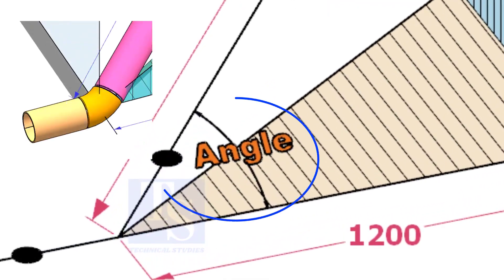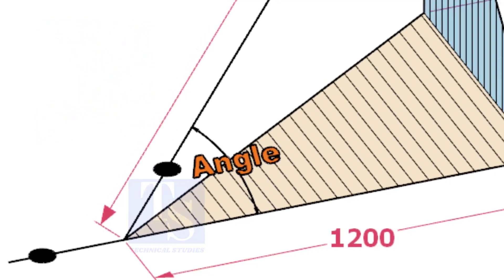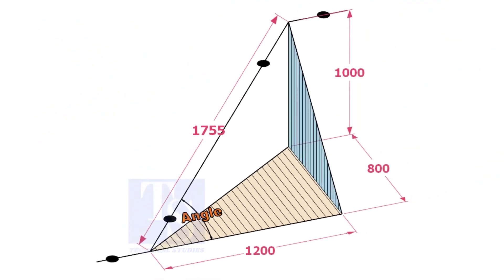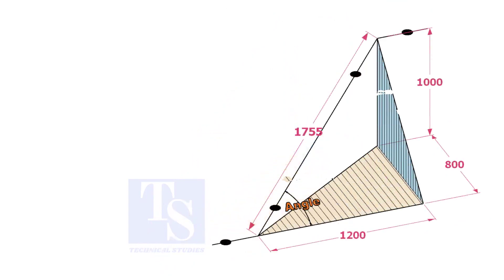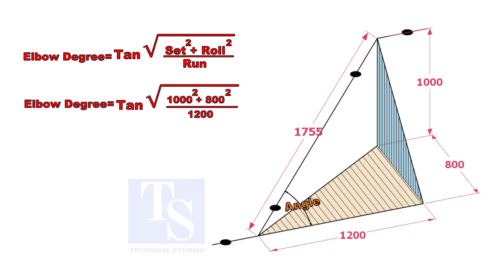Let us calculate the degree of the elbow, or the including angle. The formula is: the square root of the sum of the set and the roll, divided by the run, into tan inverse.